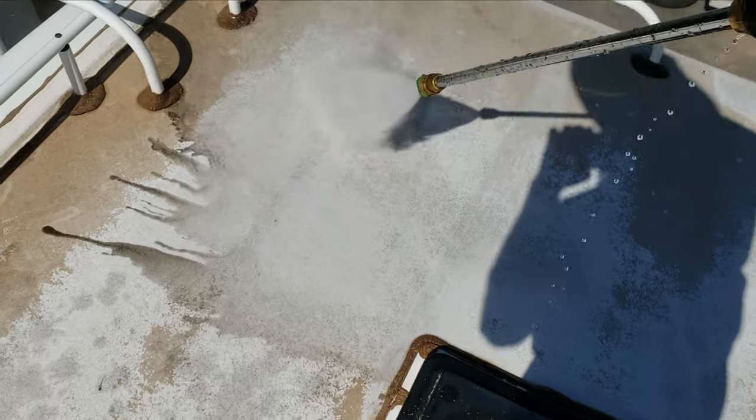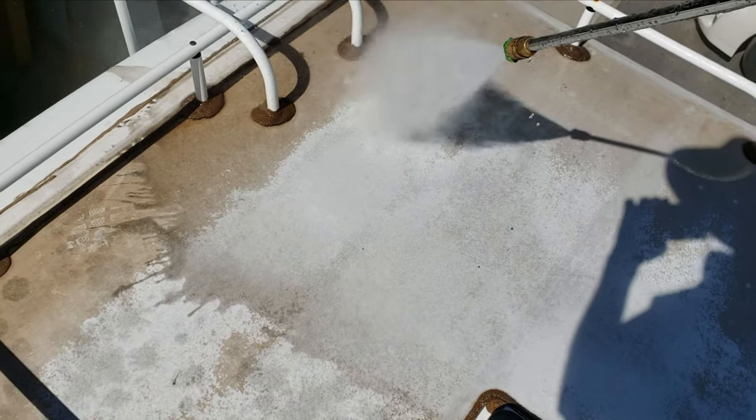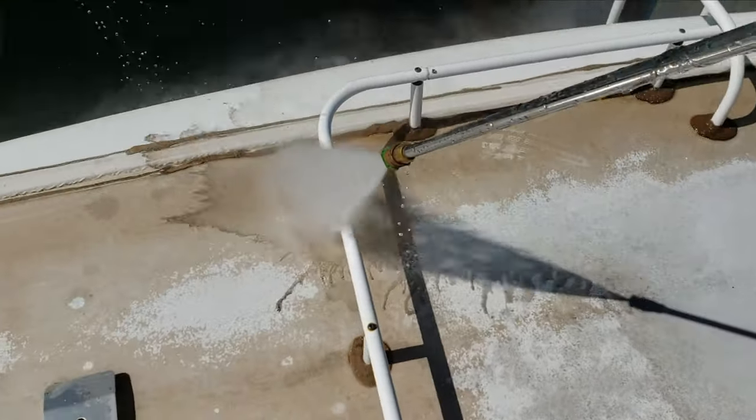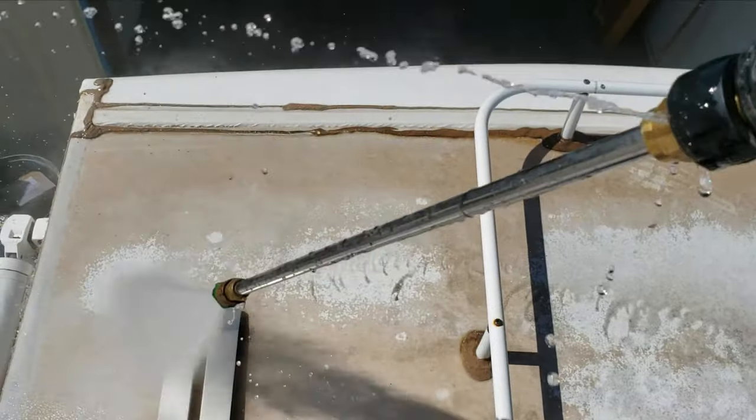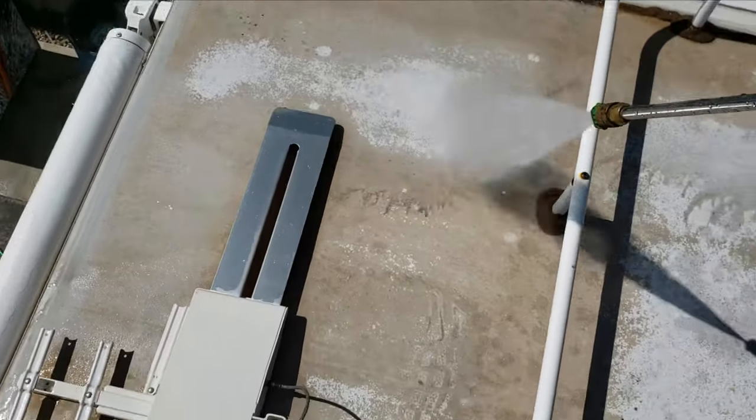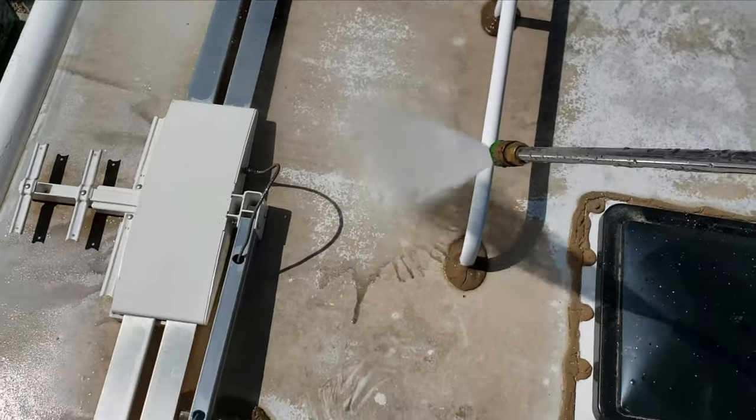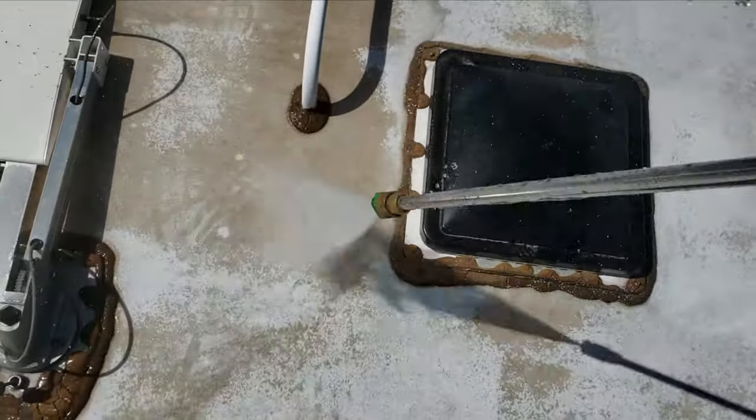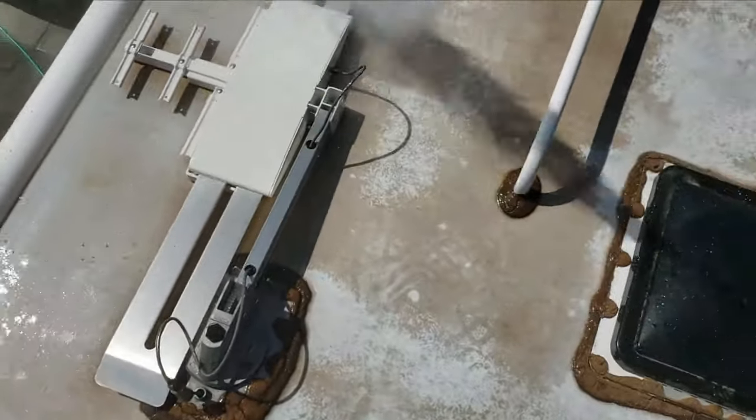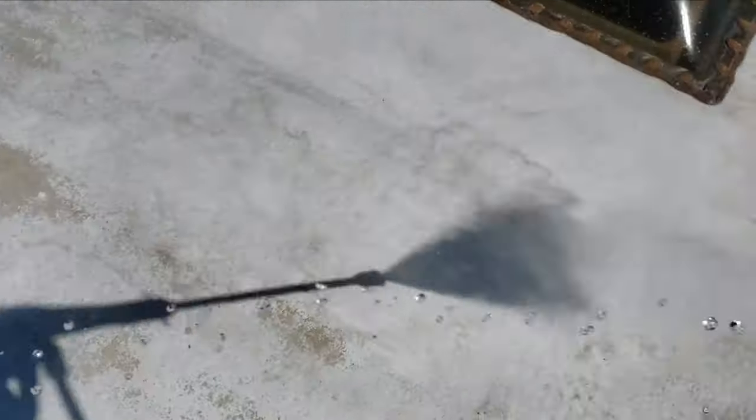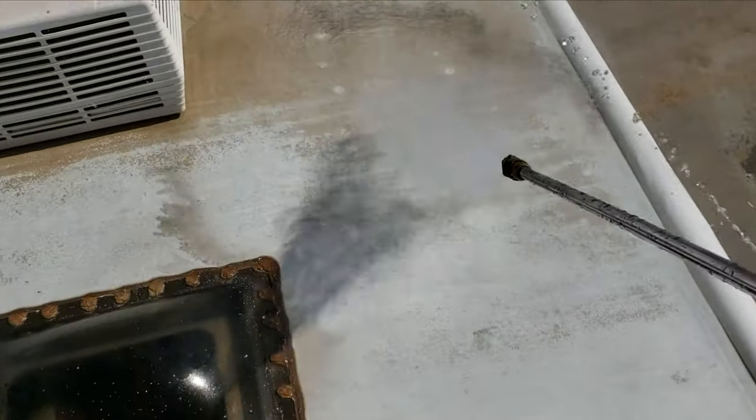So right now you can see I'm power washing this thing and that staining is not coming off. When you're power washing a rubber roof, you don't want to get the nozzle too close to that rubber roof. You will tear it. You will erode the white layer off completely. So do take some care in doing this. But yeah, that brown stain ain't coming off.